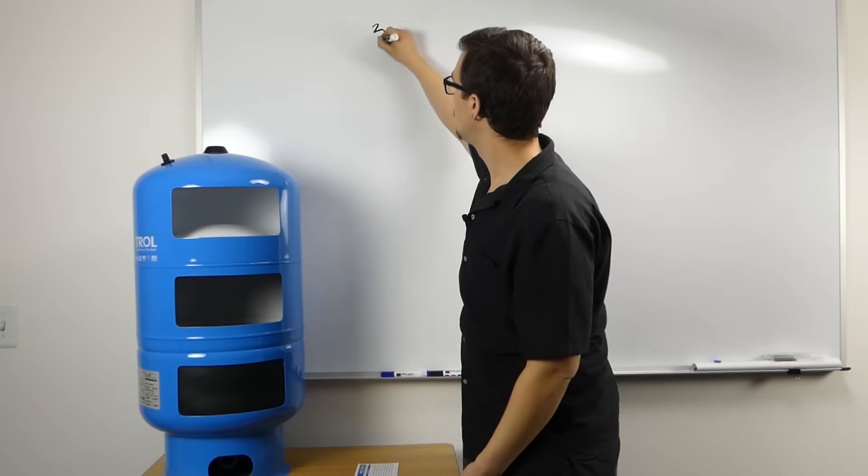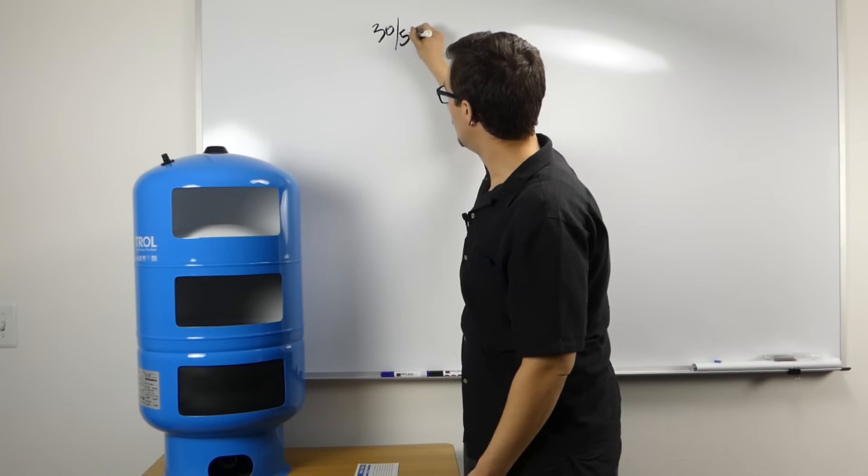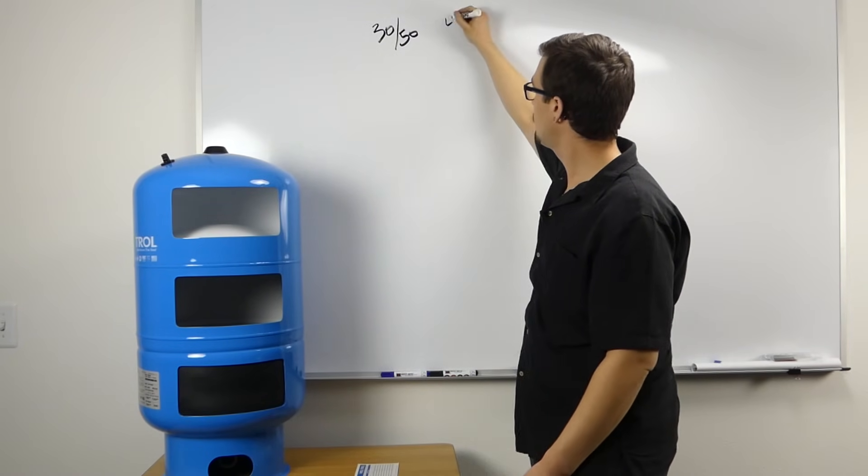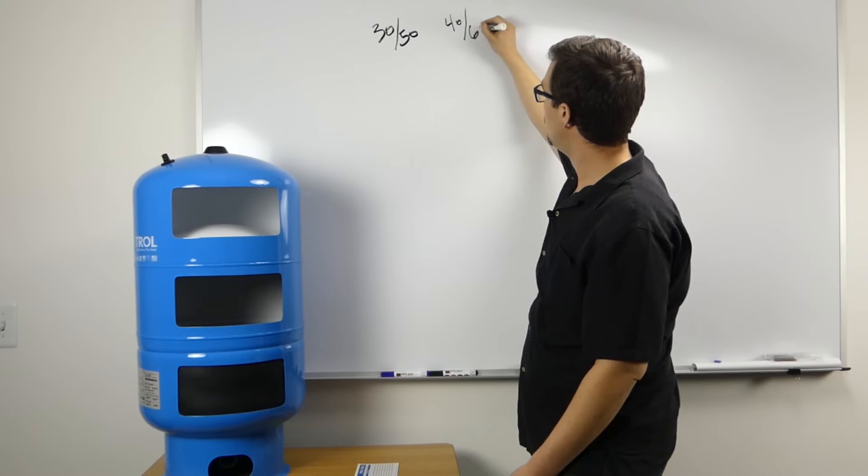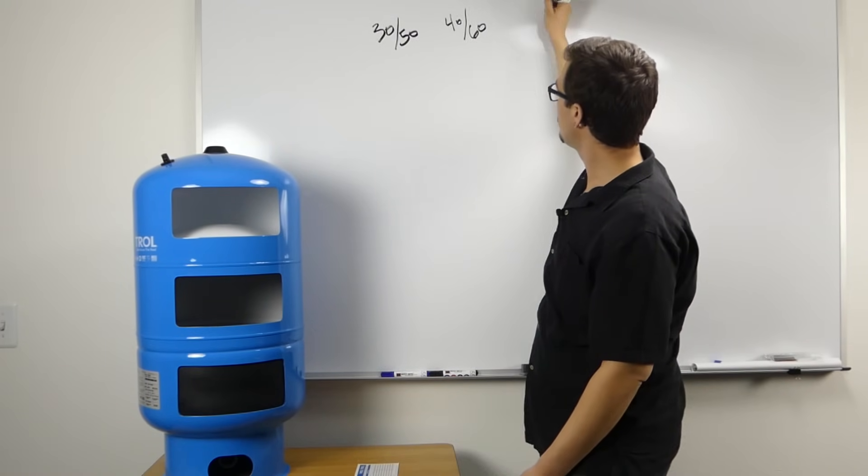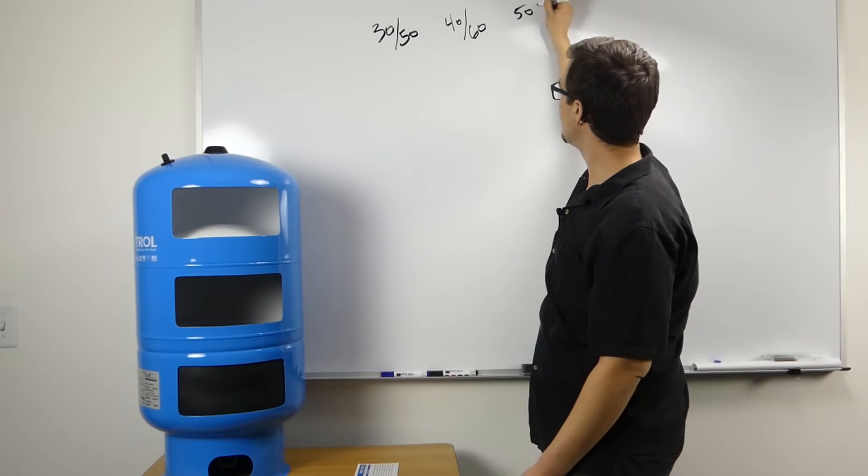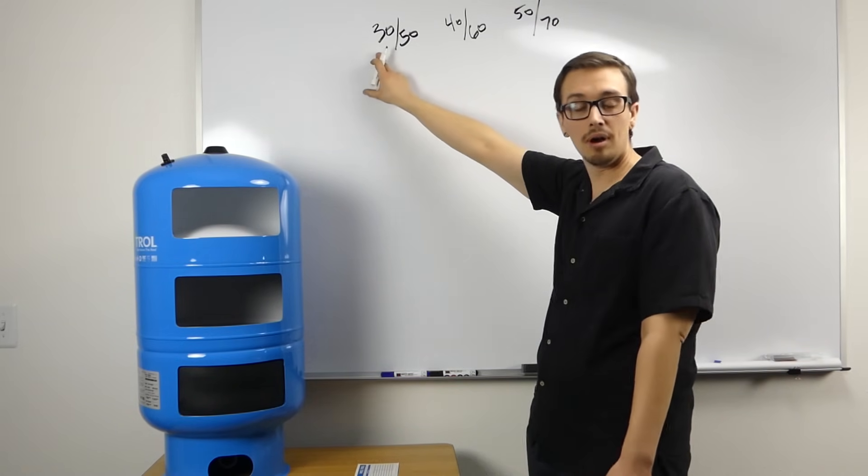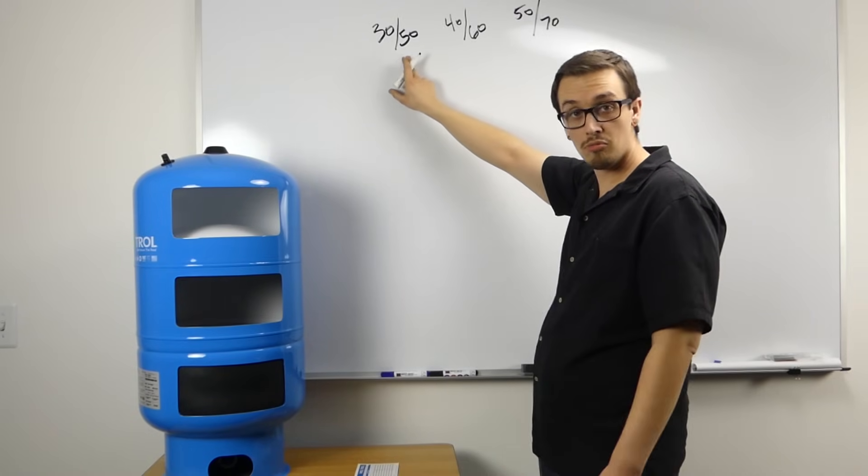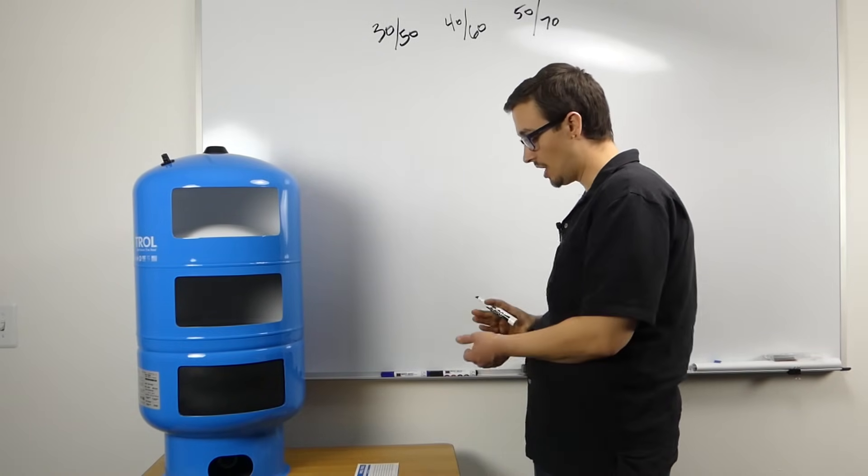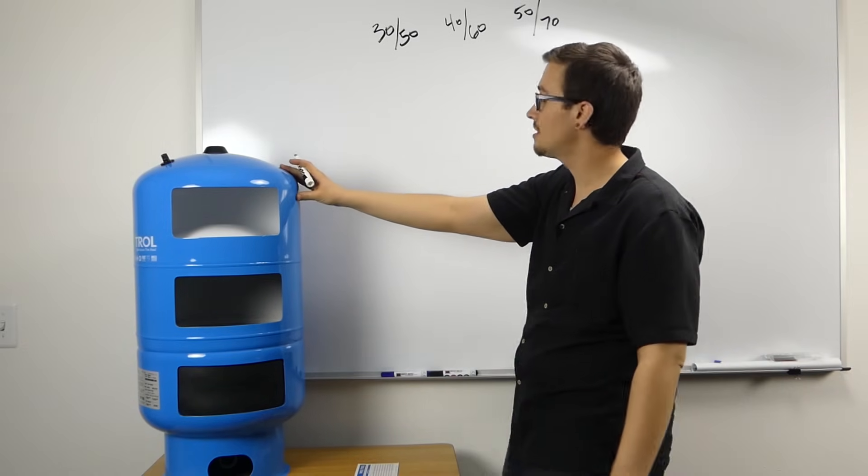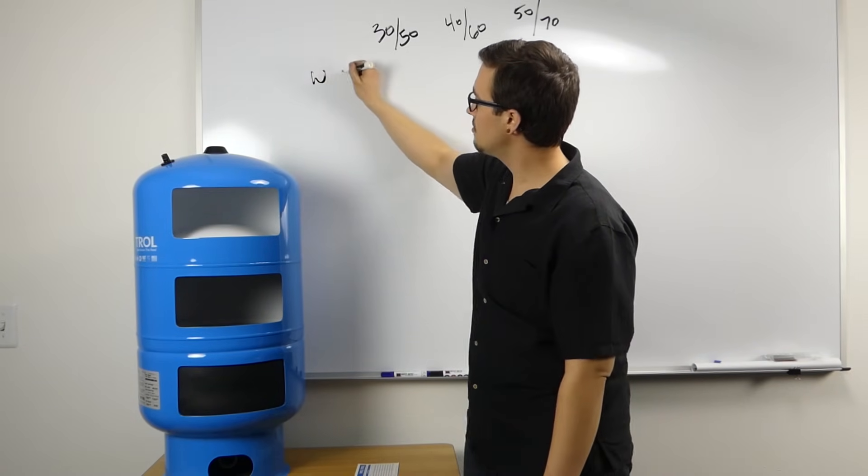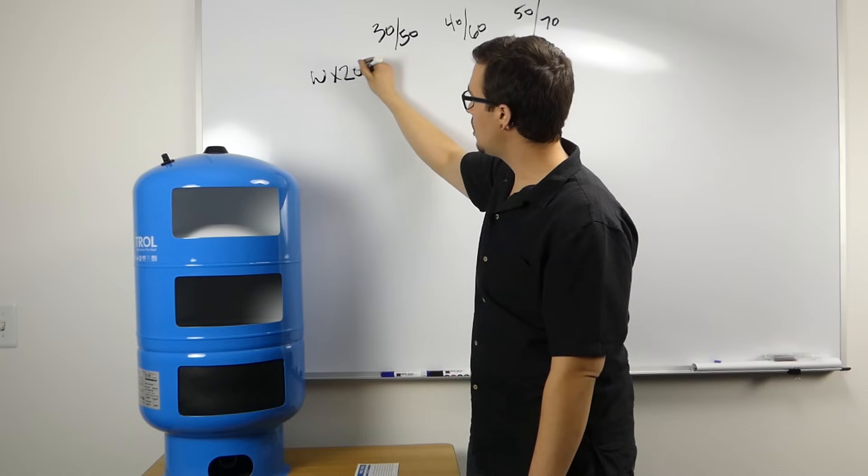The three most common pressure settings on a system are 30/50, 40/60, and 50/70. The low number represents when the pump turns on and the high number represents when the pump turns off. In the example of this tank that we have here, a WX202...